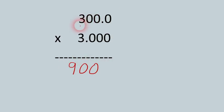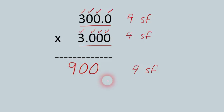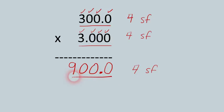Let's try 300.0 times 3.000. The calculator gives 900. The first number has four significant figures — all those ending zeros with a decimal point are significant. The second number also has four significant figures. So the answer must have four significant figures too. As it stands, 900 has only one. The easiest fix is to add a decimal point and a zero at the end, making it 900.0, so all zeros become significant. That's the correct answer.